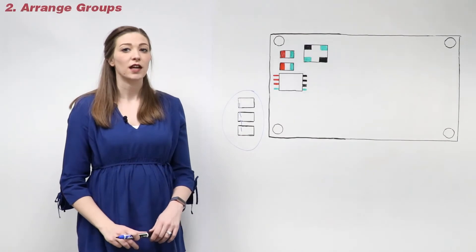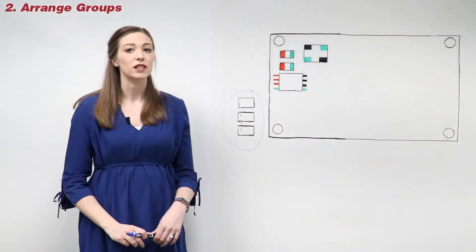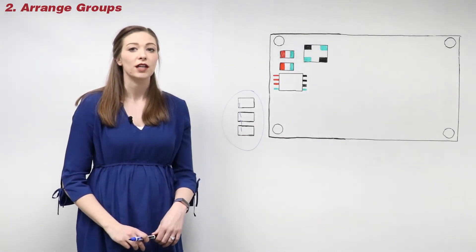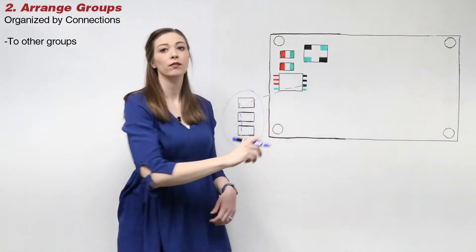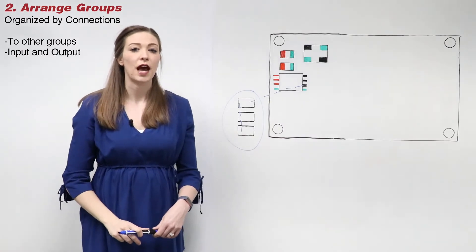Once these groups have been defined, they can then be arranged on the PCB. Groups should be organized according to their connectivity to one another, as well as their input and output connectors.